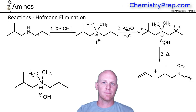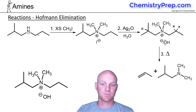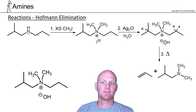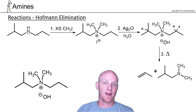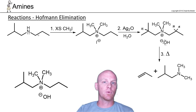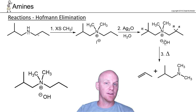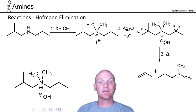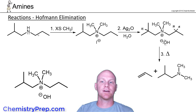Now we'll take a look at the Hoffman elimination. Don't confuse it with the Hoffman rearrangement. This is probably one of the more important reactions of amines. If you recall doing elimination reactions where we formed alkenes, and when we formed the less-substituted alkenes, some people would call that the anti-Zaitsev alkene, whereas some people would say the Hoffman alkene, and it is this reaction where it gets its name.